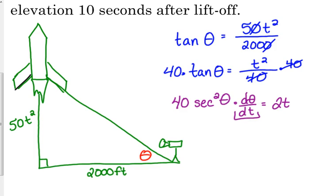So dθ/dt is what we're looking for. It wants us to find the rate of change in the elevation 10 seconds after liftoff. We have two other variables in the problem: theta and t. Well, they told us t. That's 10 seconds, so we can plug in 10 there. 2 times 10.